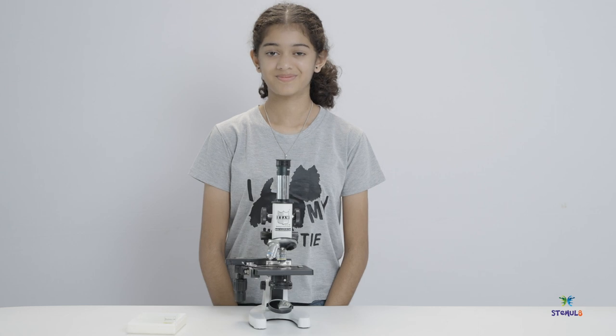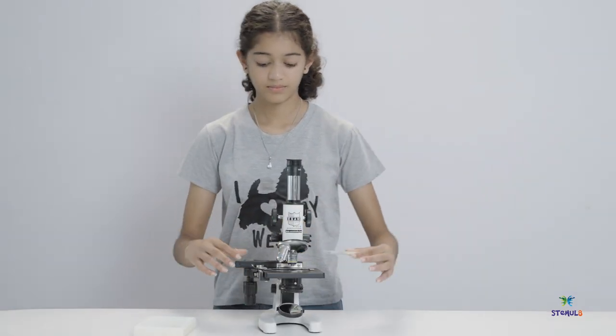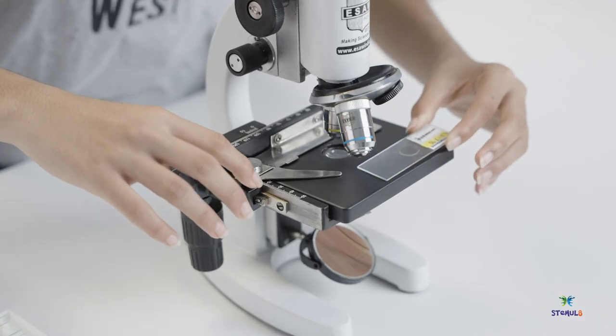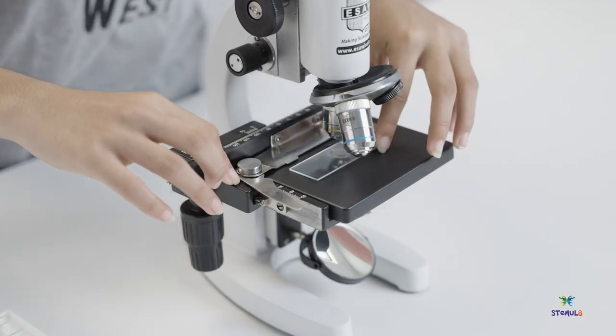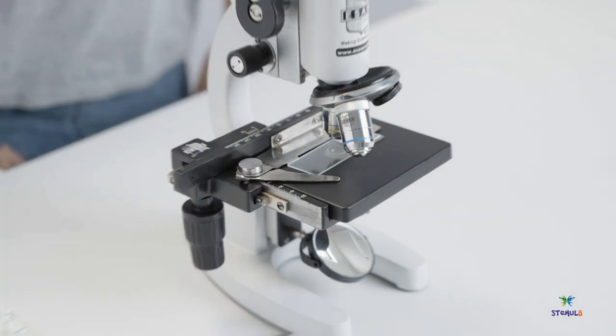You are ready now to mount your specimen on the stage. Press the rotating lever on the stage and place it in a 90-degree corner of the slide holder. Then release the lever. This will hold the slide.